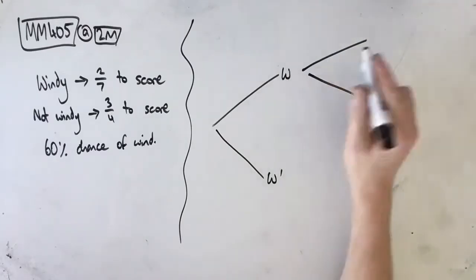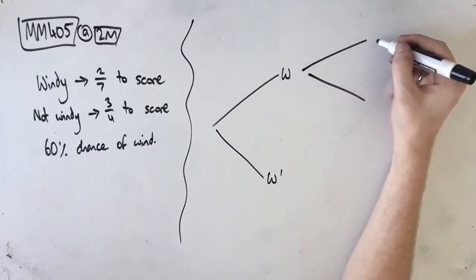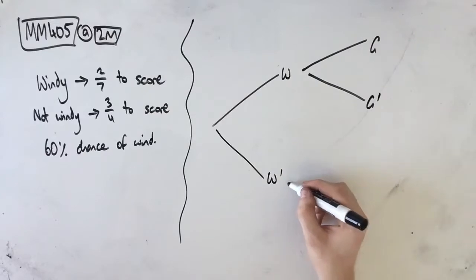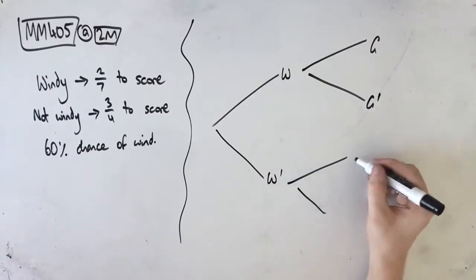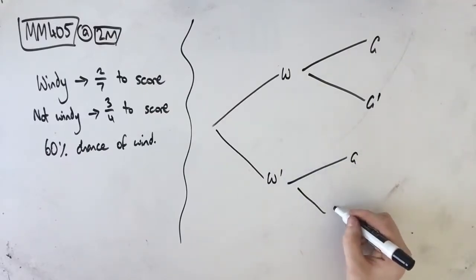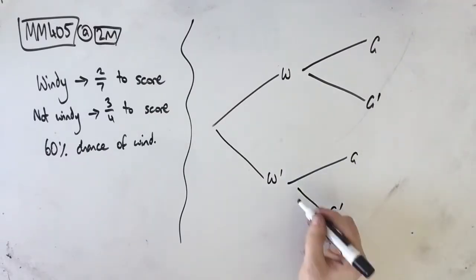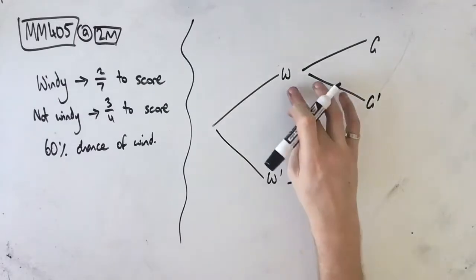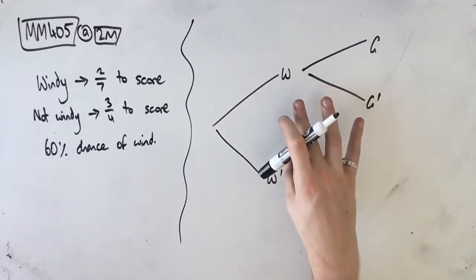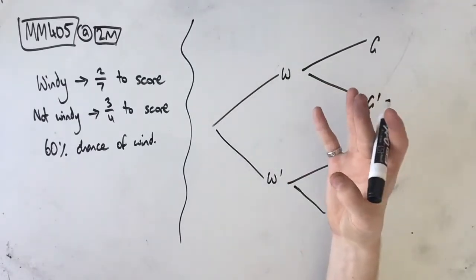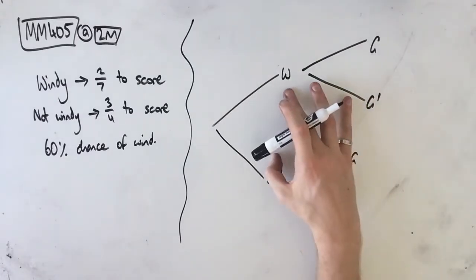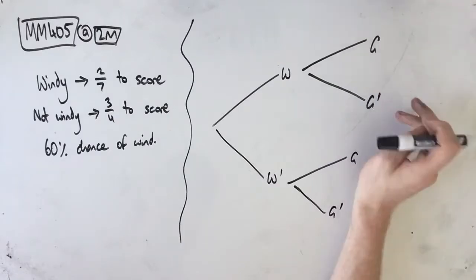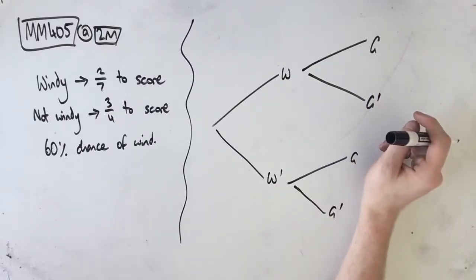So whether it's windy or not affects the goal. If it's windy, Addison can either kick a goal or not kick a goal. And if it's not windy, same thing — he can either kick a goal or not kick a goal. There's no other options here: it can be windy or not windy, and he can either kick a goal or not kick a goal.